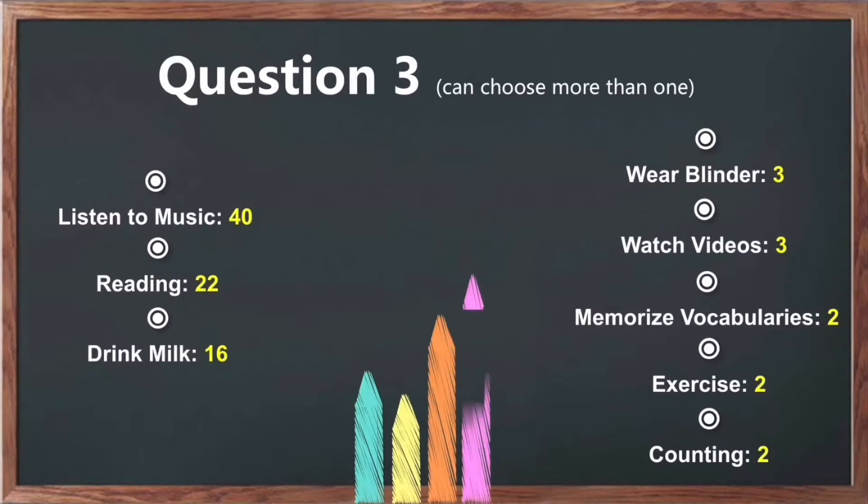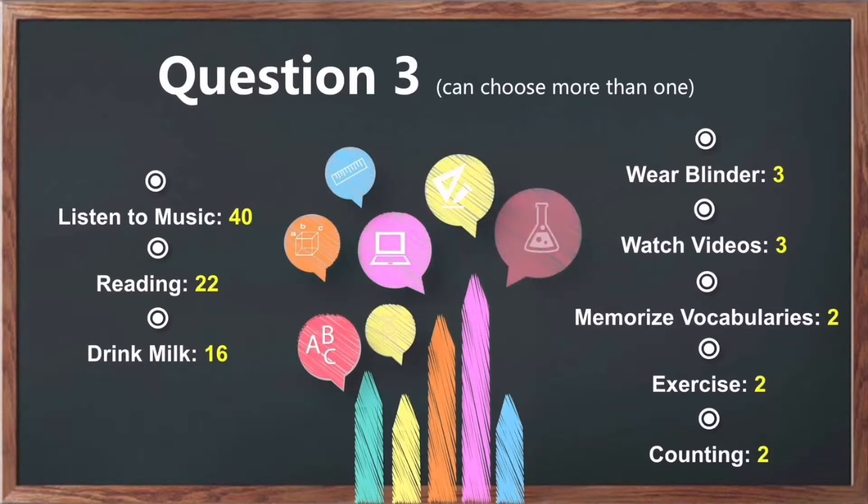For the question of what methods do you use to help you get to sleep, the results are shown. On the left, there are the choices that we offer. 40 people have listened to music, 22 have read books, and 16 have drunk milk. We also get some other answers, which are shown on the right. For example, wear blinder, watch videos, memorize vocabularies, do exercise, and traditionally, counting.